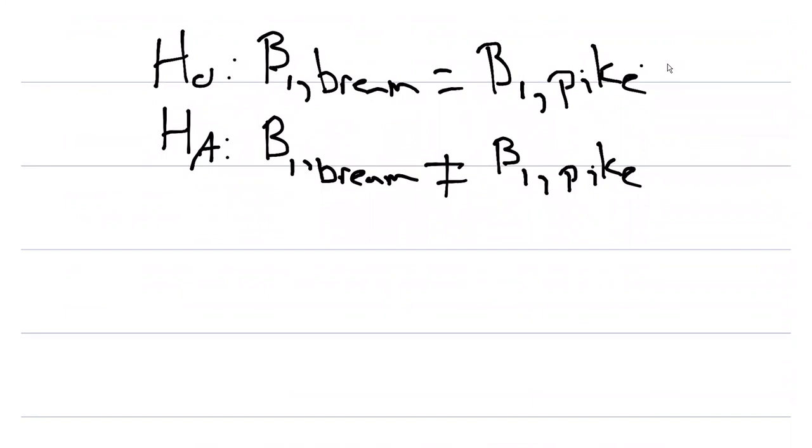The alternative hypothesis is that they're not equal. We can use the test statistic above to find out what this value of t might be.